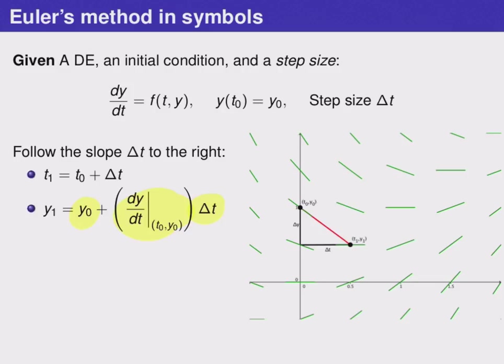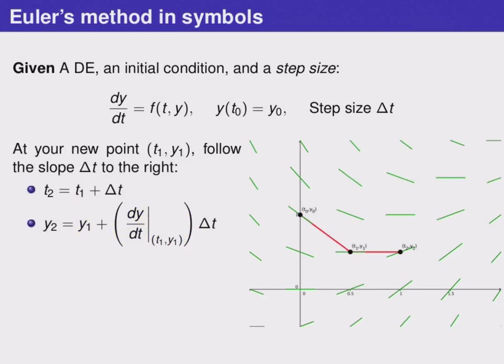So now we've arrived at a new point, T1, Y1. You should take a look at the picture on the right to make sure that you understand how each of these is related to the previous one. Now that we've arrived at this new point, T1, Y1, we can repeat the process to get to yet another point, T2, Y2.